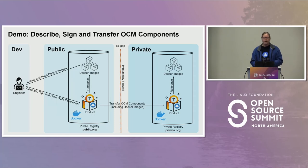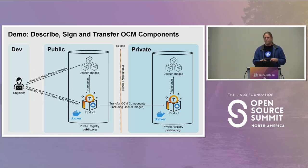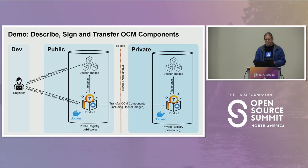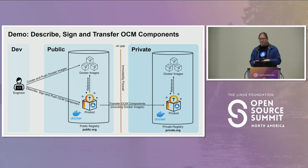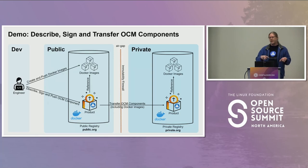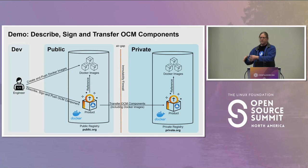In this demo, we'll describe, transport, and deploy a simple software component — doing this twice with V1 and V2 to show the process is repeatable. We're creating our security boundary using two orgs in a Gitea server. This isn't truly air-gapped, but OCM supports storing component versions in a tar file, which you could put on a USB drive, transport into a secure location, and upload into an OCM repository there — covering the air-gapped scenario.